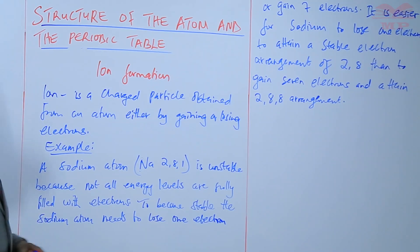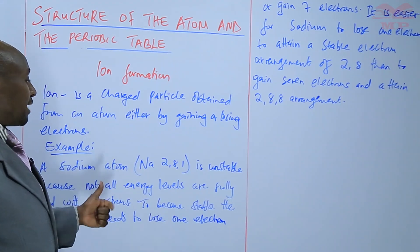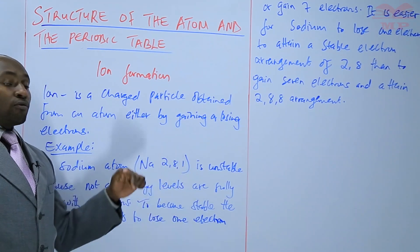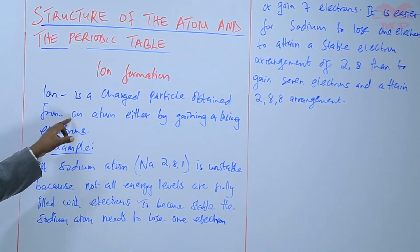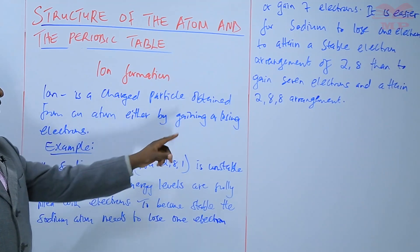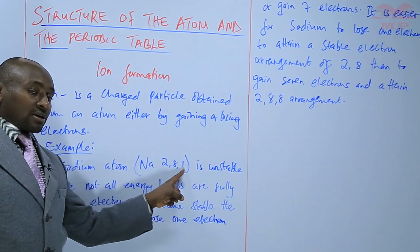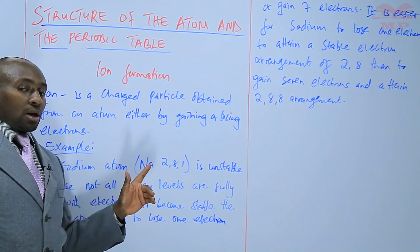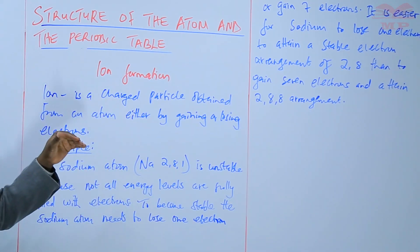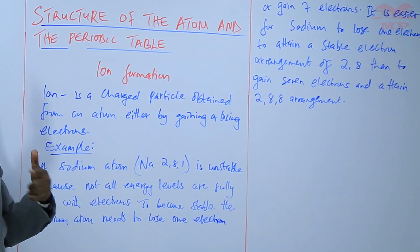So in this case, we are going to show how sodium loses this one electron. When this sodium atom loses one electron, it will form a sodium ion — and that's why we're saying that an ion is a charged particle obtained from an atom either by gaining or losing electrons. So when this one electron is lost, the number of protons and electrons will no longer be equal. Initially, in an atom, the protons and electrons are equal, but when you lose one electron, the protons will be more by one.